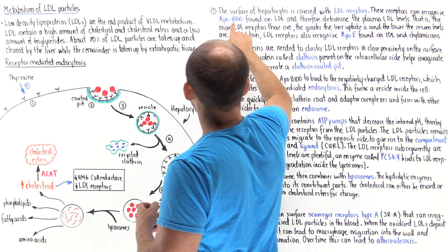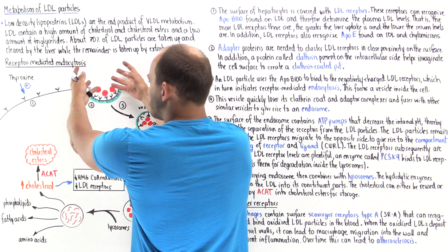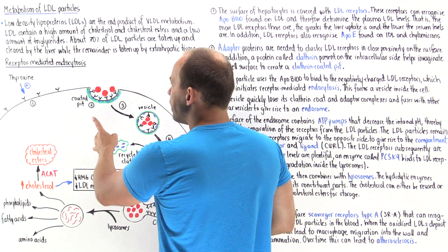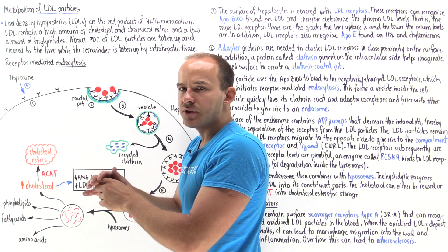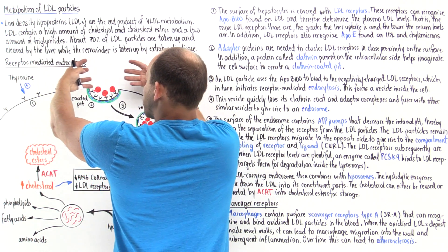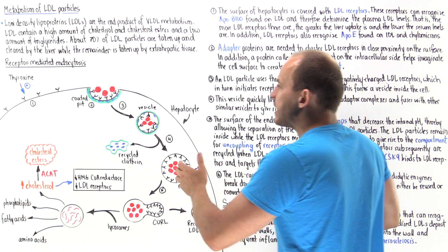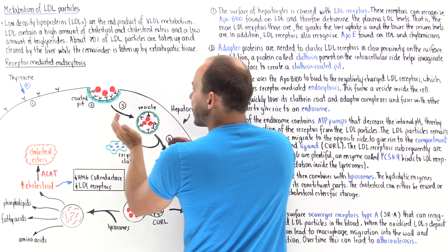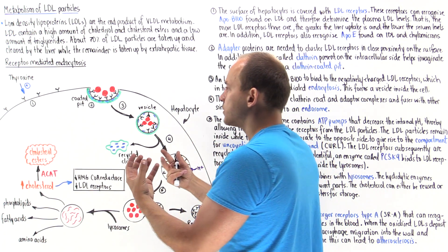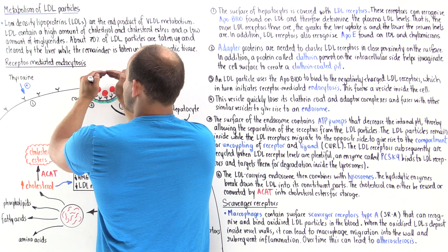LDL particles use ApoB100 to bind onto LDL receptors, but two things must happen before we can actually bring the LDL into the cell. First, we have these adapter proteins, or adapter complexes, that bind onto the surface and allow all these receptors to accumulate in one localized region on the cell — instead of being dispersed, they are brought together. In addition, we have an additional protein known as clathrin that coats the internal portion of the membrane, allowing the formation of this invagination, this pit. All of these LDL receptors are localized inside the pit, and now the LDL particles can bind onto the receptors, and this process of invagination can take place.